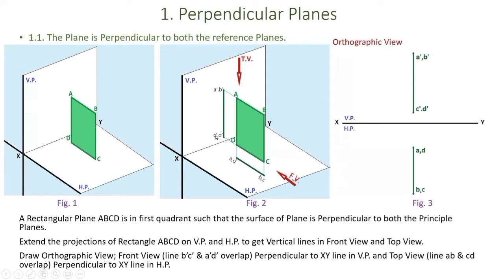Now converting this pictorial view into orthographic view: first we draw reference line XY. The vertical plane is above the XY line and the horizontal plane is below it. We measure the distance from the reference line XY to point CD and copy that dimension to draw a vertical line as the front view. Similarly, we measure the distance from the reference line to the starting point and draw the top view — a line perpendicular to the XY line.